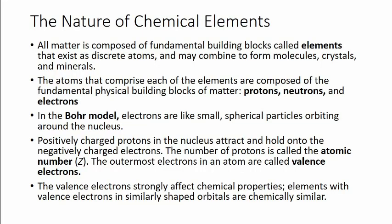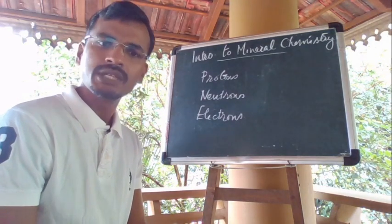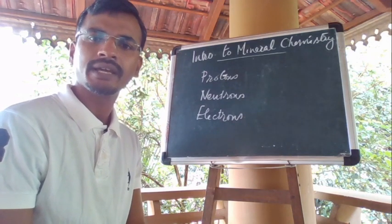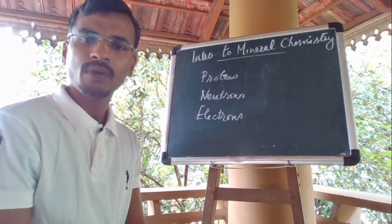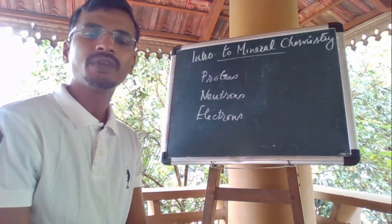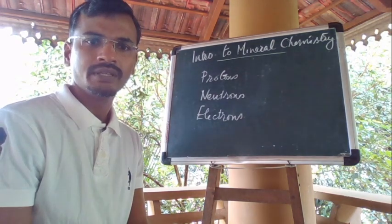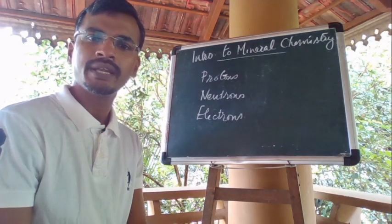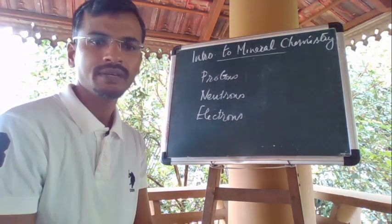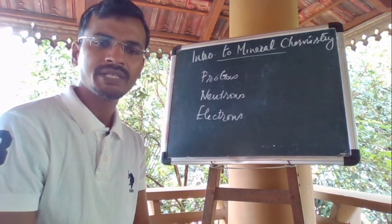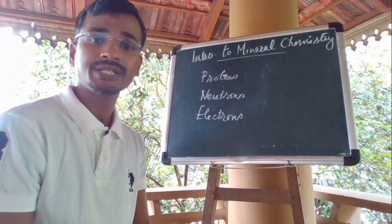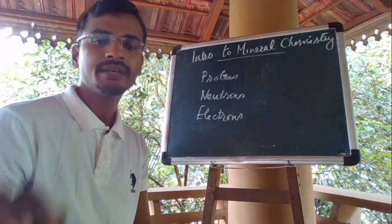In the Bohr model, electrons are like small spherical particles orbiting around the nucleus. Constantly charged protons in the nucleus attract and hold on to the negatively charged electrons. The number of protons is called the atomic number. The outermost electrons in an atom are called the valence electrons. Valence electrons strongly affect chemical properties.